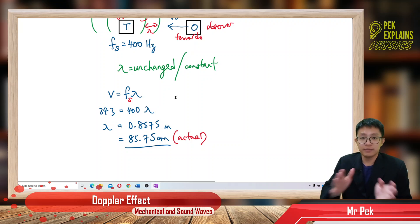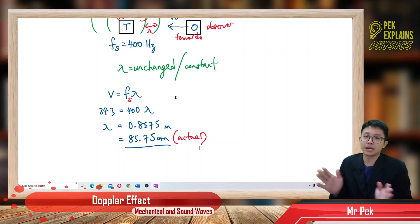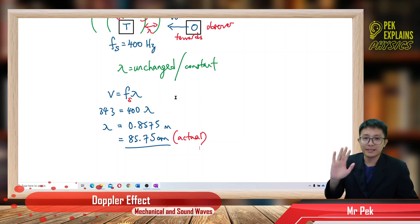The original wavelength is just 85.75 cm when the source is stationary. Just use V equals F times lambda — no need to use any Doppler effect equation. That's all for Doppler effect. Hope you like the video. See you again in the next upcoming videos. Bye!